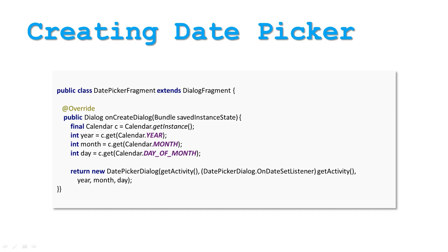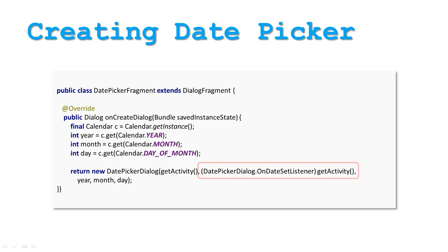The DatePicker has a very similar implementation to TimePicker. As before, you will extend the DialogFragment and declare an onCreateDialog method, which will initialize our DatePicker. It will need to return an instance of DatePickerDialog, which takes in the DatePickerDialog OnDateSetListener interface as a parameter, to receive a callback when the user sets the date. As in the prior example, it will be the host activity.